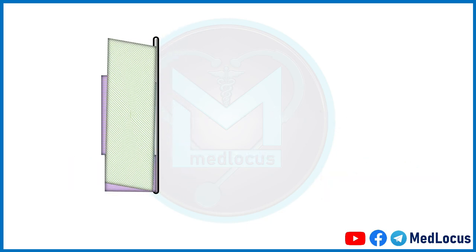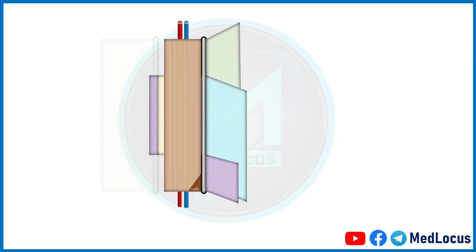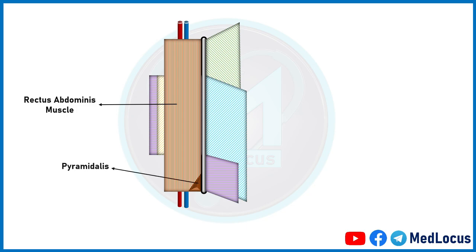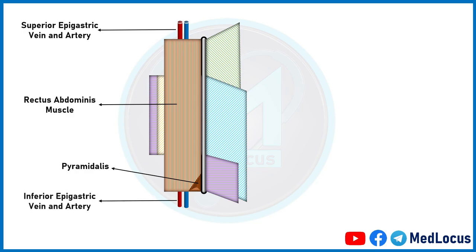Now we will talk about the contents of the rectus sheath. The rectus abdominis muscle is, of course, the primary content of the rectus sheath. The pyramidalis muscle is also a content of the rectus sheath, present in the anterior and lower part of the rectus abdominis muscle. We also have two arteries and two veins in the rectus sheath: the superior epigastric artery and vein, and the inferior epigastric artery and vein.